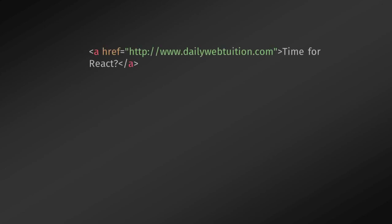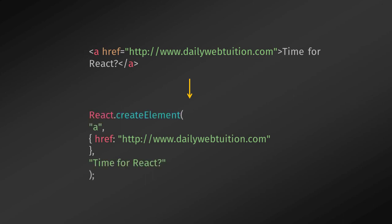If you wanted to create a simple anchor tag with an href attribute, you can do that using the createElement method. Using createElement, you can create a simple anchor tag with the href attribute and specify some text to the anchor tag. However, using hard-coded values for attributes isn't flexible.